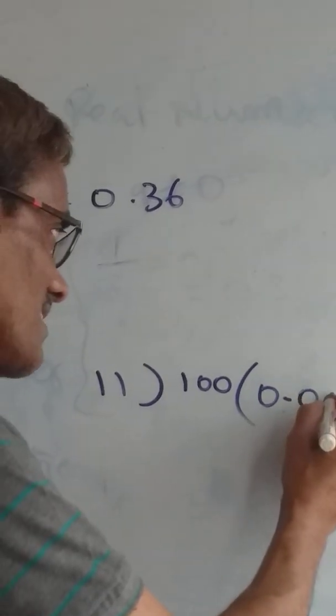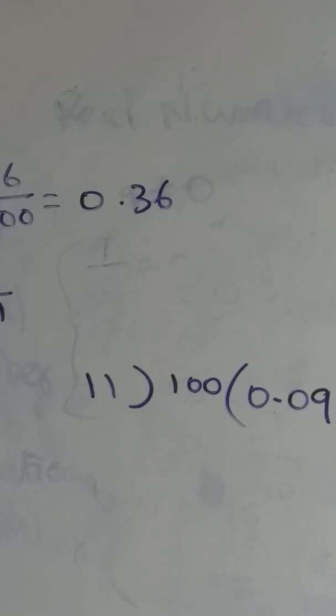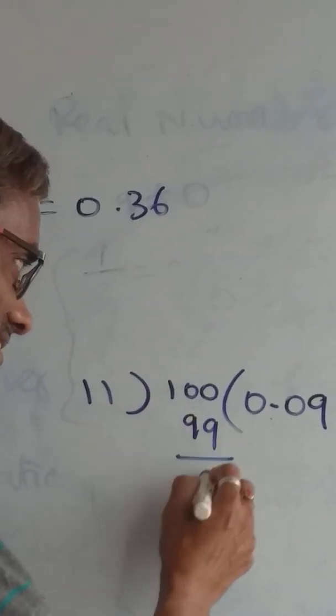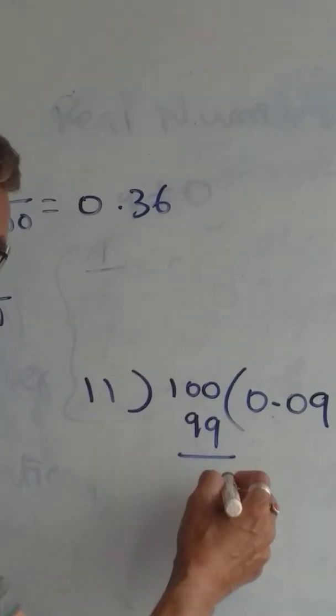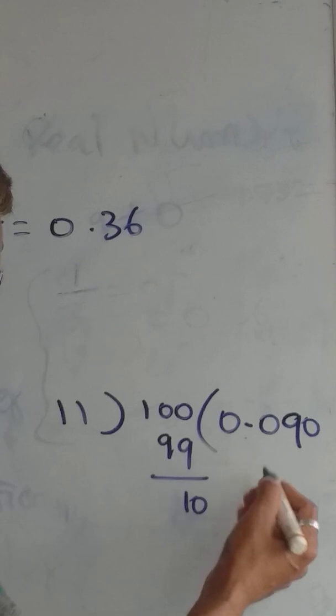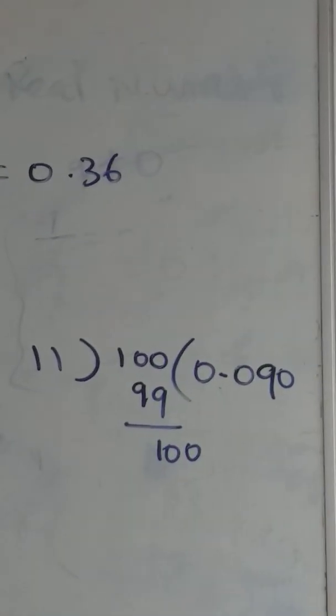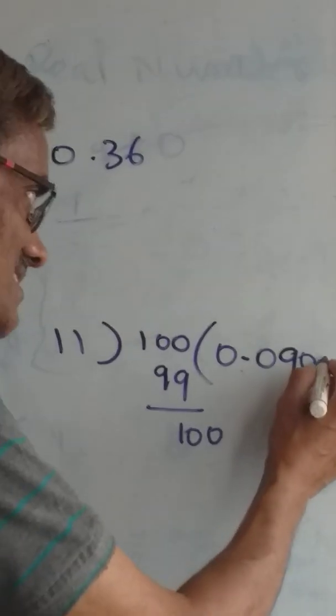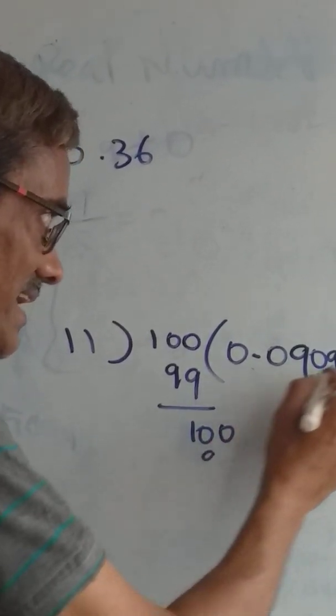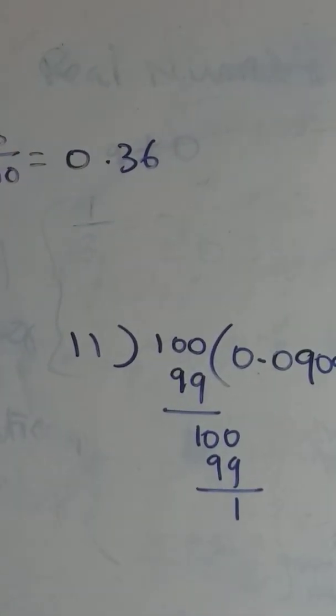Now, 100 divided by 11? 9 times. 11 times 9 is 99. The remainder is 1. Again make it 10, not possible, add another 0. Write 9 again. 99, with remainder 1.